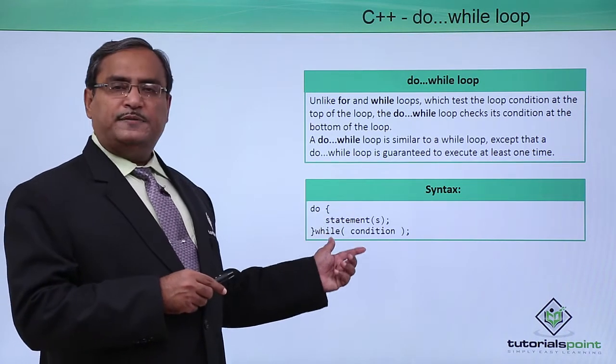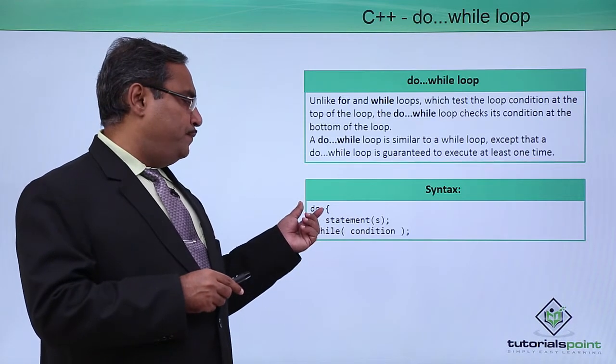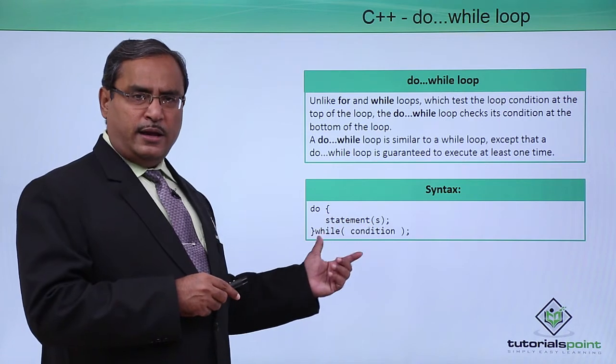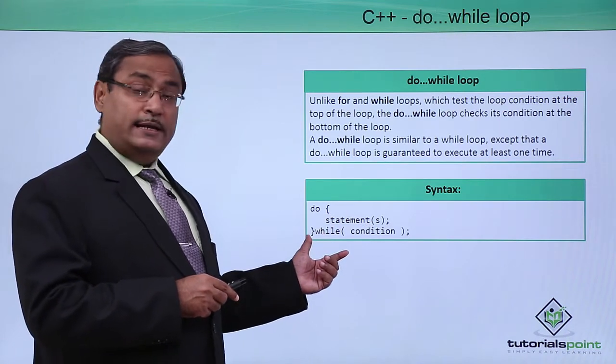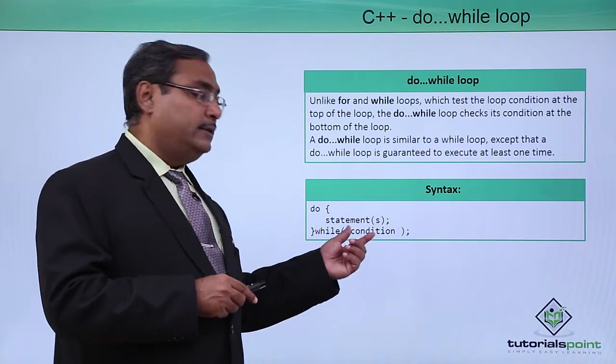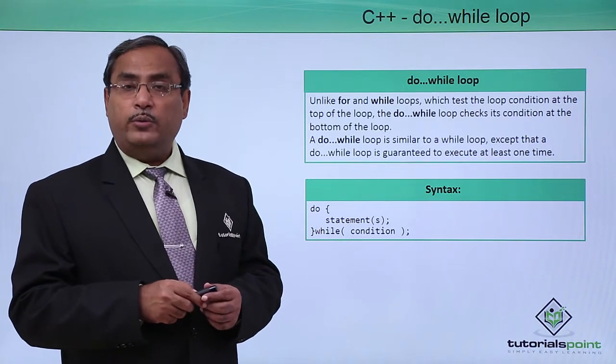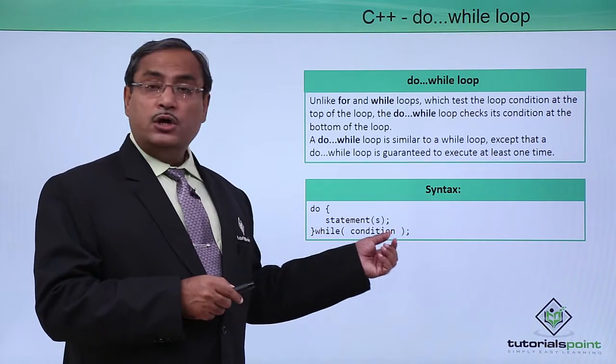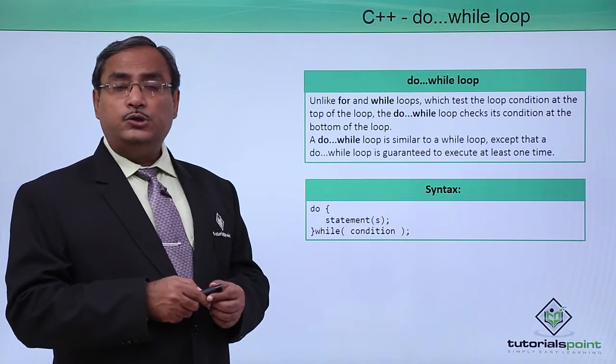Here is the respective syntax. Do, curly brace, and then we will be having the statements to be written. After the curly brace, that is the end of the block, we are going to write the respective while statement along with the condition within parentheses and semicolon will be there at the end. That is the syntax of a do-while loop.